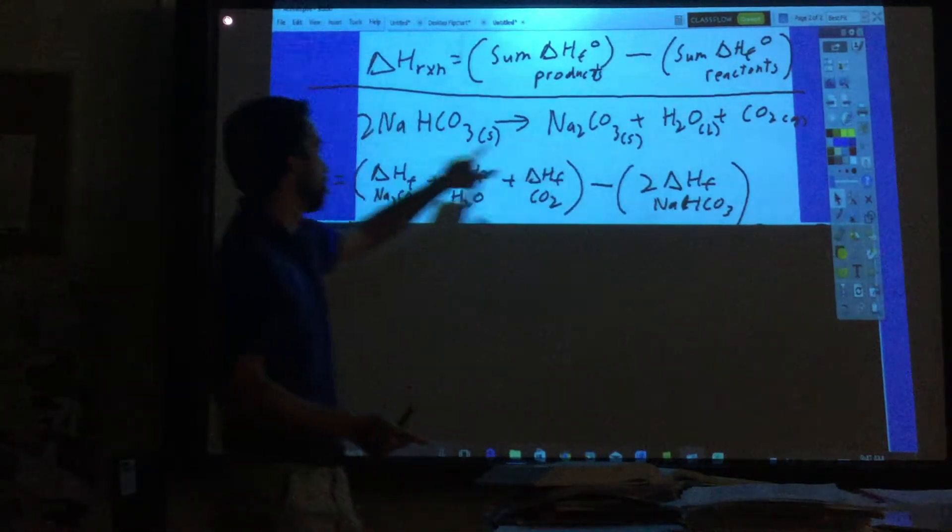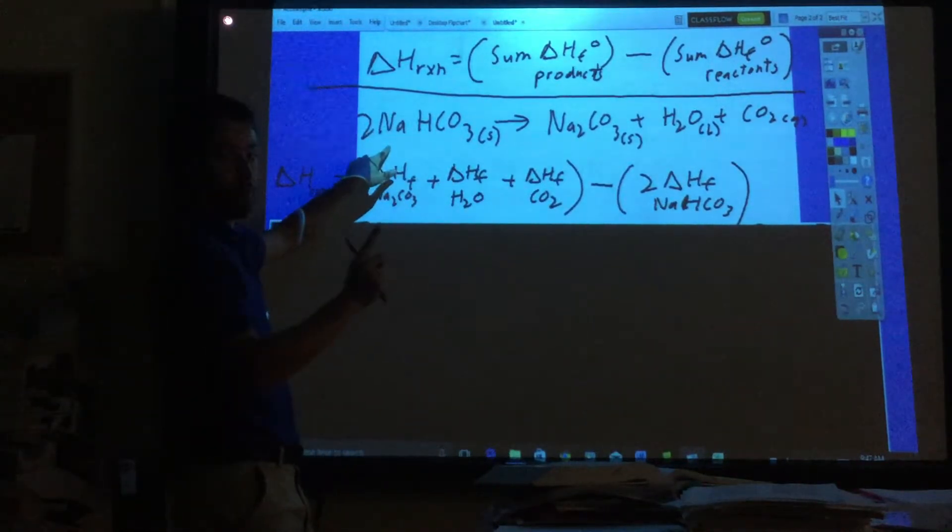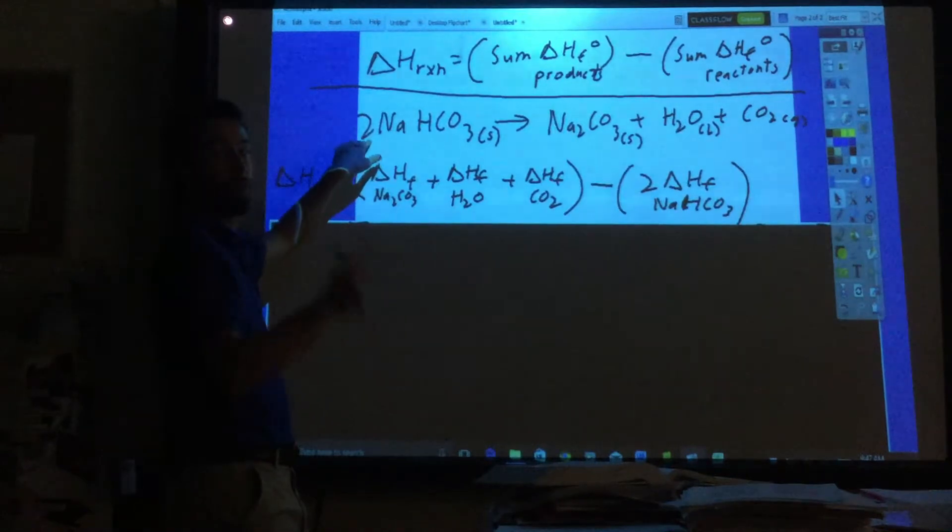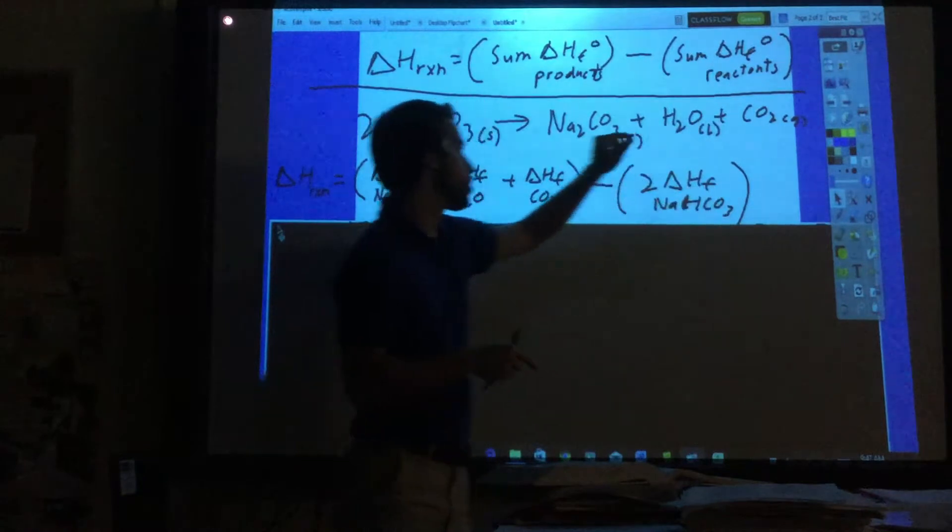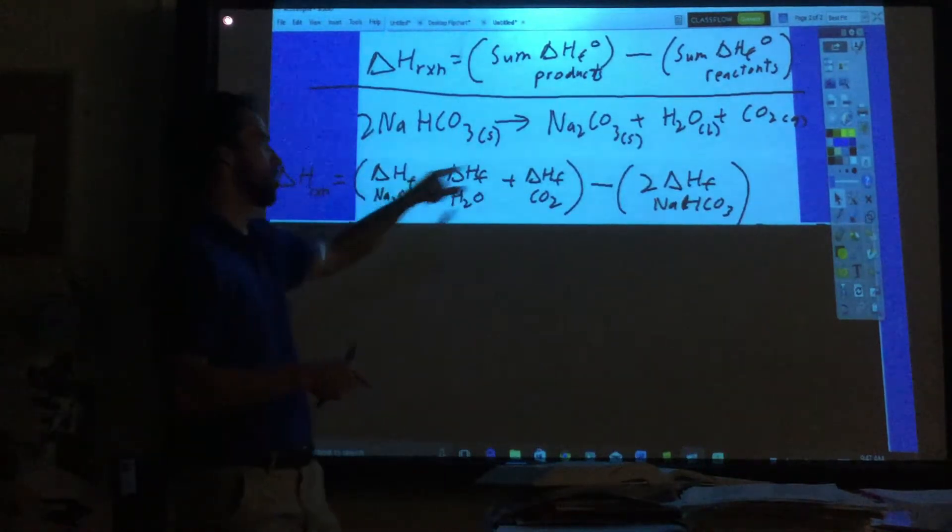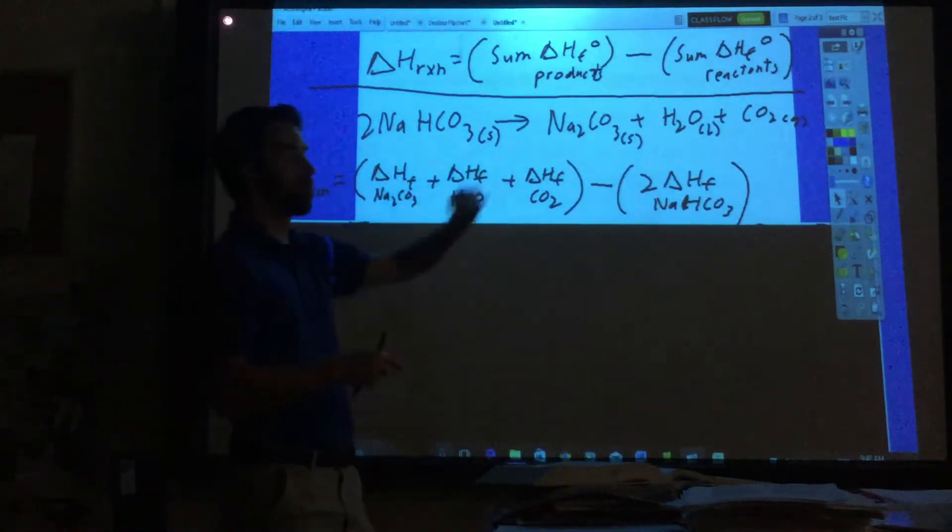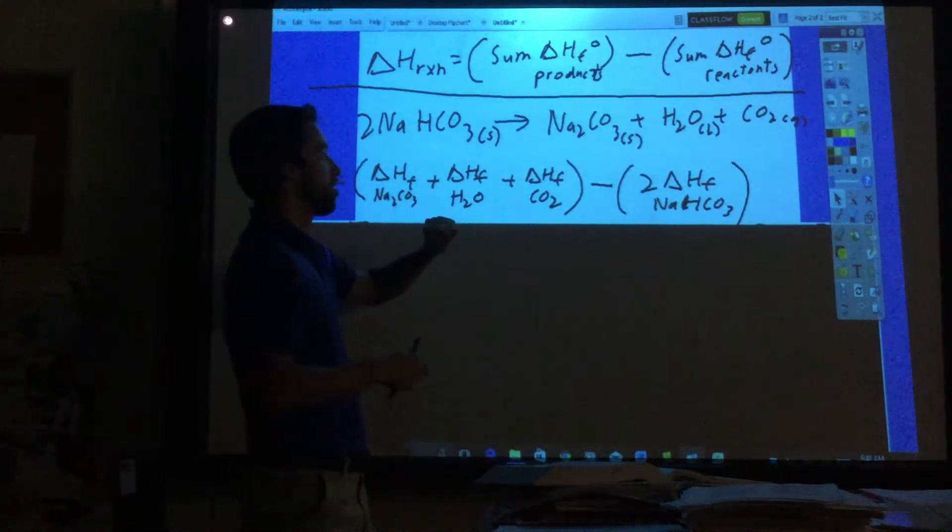Then we subtract the reactants. The same thing - the Delta Hf for the reactants. In this case there's only one reactant, however since there's a two for a coefficient in front of it, we need to multiply this by two. If there were any numbers in front of the products we'd have to multiply those, but since they were all ones, we just keep it like that.